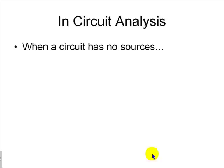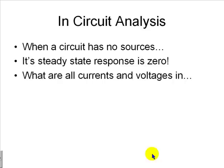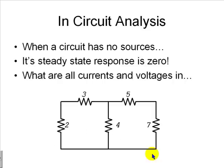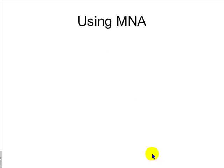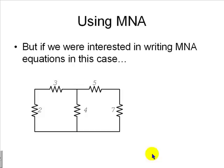If we have a circuit with no sources, the final steady-state response is going to be zero. What are the currents and voltages in a circuit like this one? No sources, eh? Well, if we use them in a KCL, but we are interested in writing the equations in the s domain.